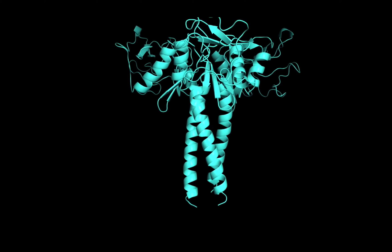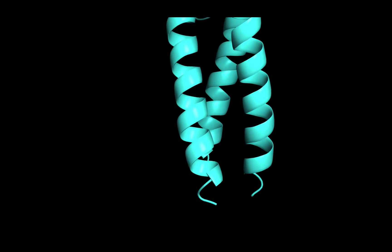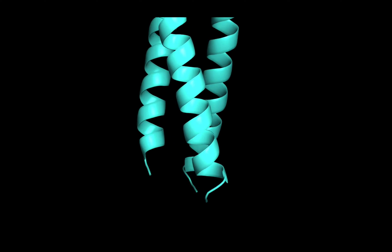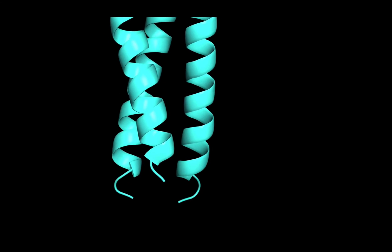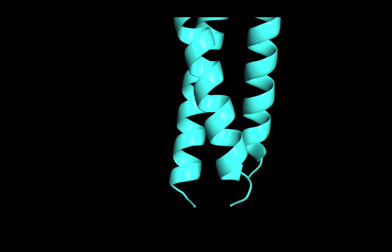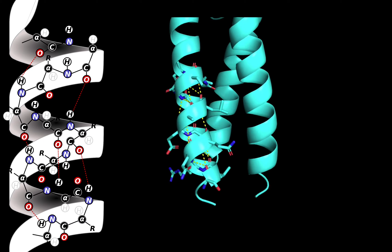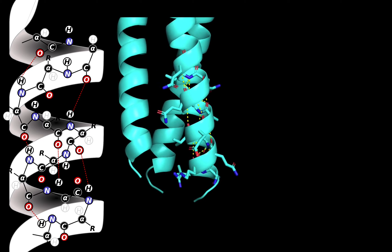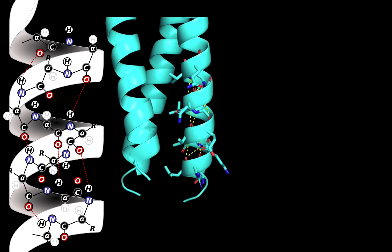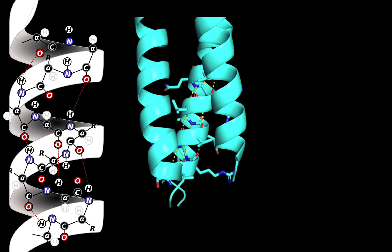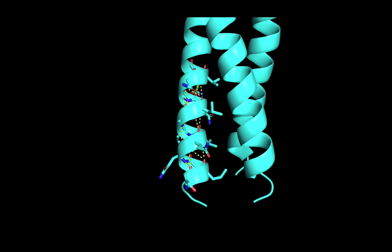Now let's take a look at the alpha helix. These twisting amino acid clusters are also stabilized by backbone hydrogen bonds. When we show the stick rendering and add in the yellow hydrogen bonds, we'll notice they line up differently. Each carbonyl group is bonded to an NH of another backbone atom three to four amino acids away.